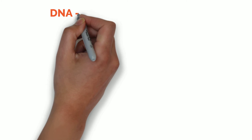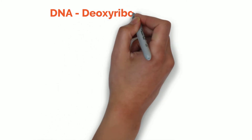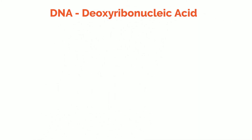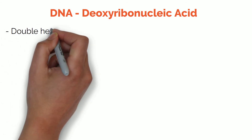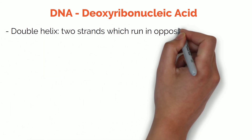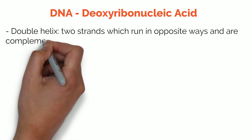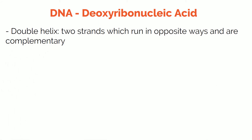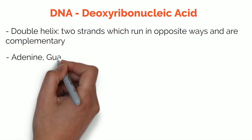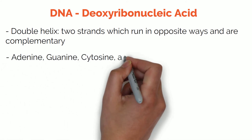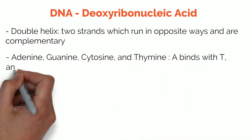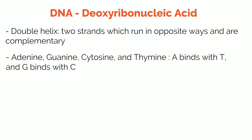So now let's get specific. DNA stands for deoxyribonucleic acid and it is shaped as a double helix. A double helix is basically two strands which run in opposite ways and which are complementary. In a previous video I mentioned that DNA is made up of four bases: adenine, guanine, cytosine and thymine. These bases group together in pairs, so adenine binds to thymine and guanine binds to cytosine. That is their only combination.